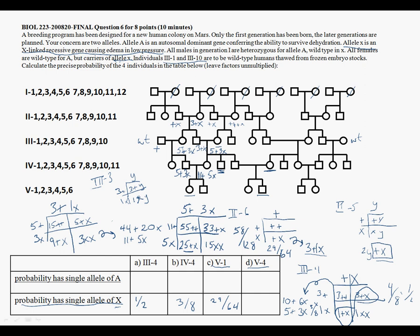Continuing with question six from exam 25, we're now looking at individual generation, generation five, individual four, so five, four. And because he is male, he inherited a Y chromosome from his father, and he inherited an X chromosome from his mother.